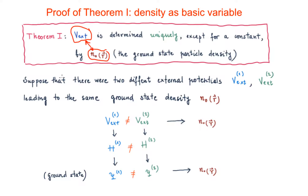We are going to follow the following procedure. Suppose that there were two different external potentials, Vx1 and Vx2, leading to the same ground state density N0. These external potentials are different, so the Hamiltonians associated with them are going to be different as well.